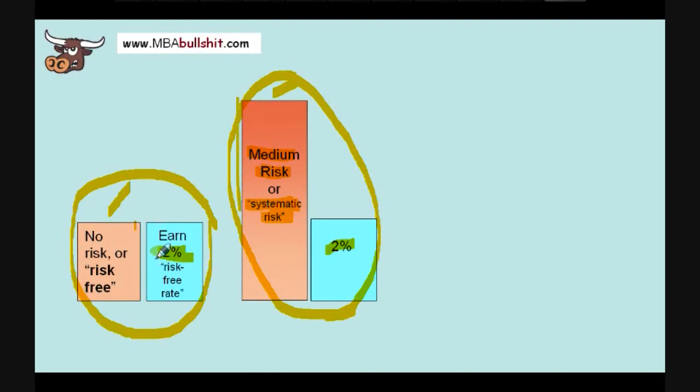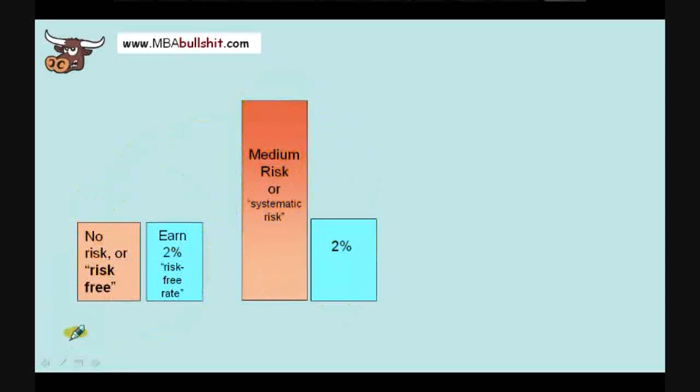Well, if you have at least some intelligence, then for sure you would choose this investment and not this one. Why? Because in this investment, you earn 2% but you have no risk. In this investment, you also earn the same small profit of 2% or you expect to earn the same small profit of 2% but you have even higher risk compared to this one over here. So, of course, it makes much better sense to put your money here in the no risk investment.